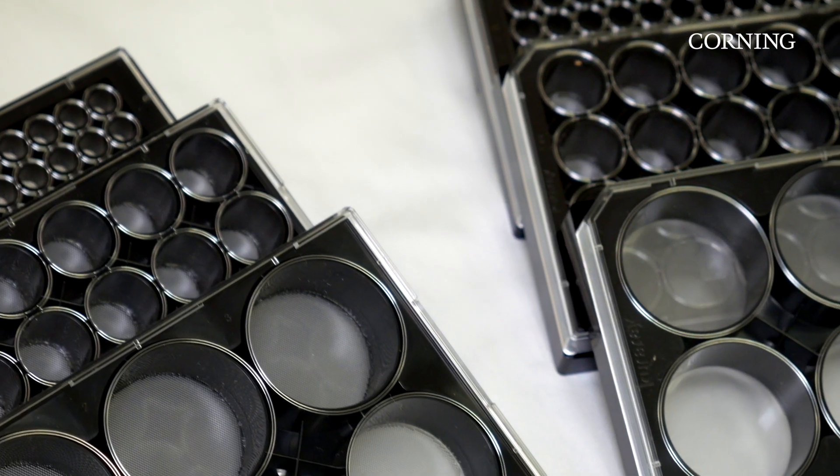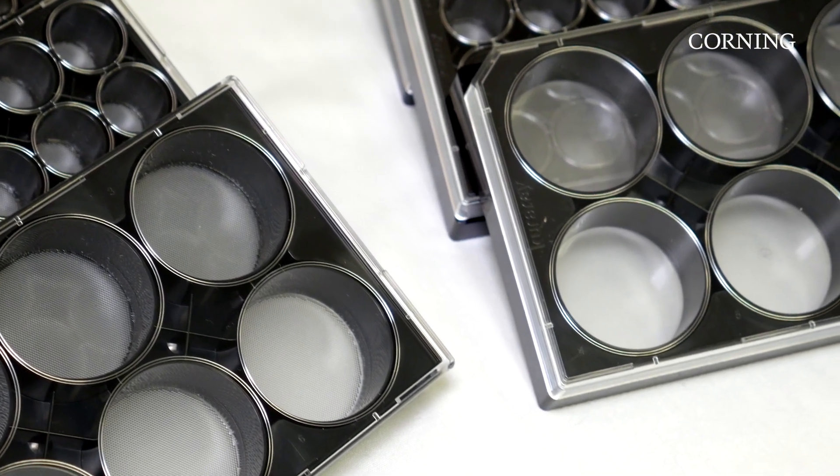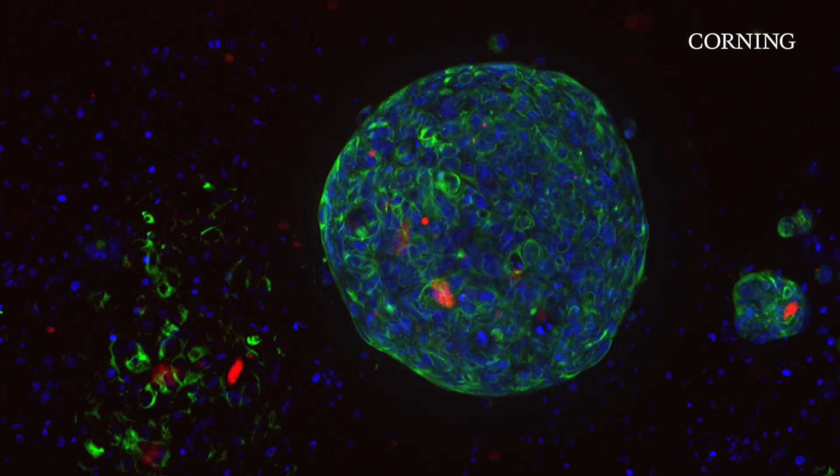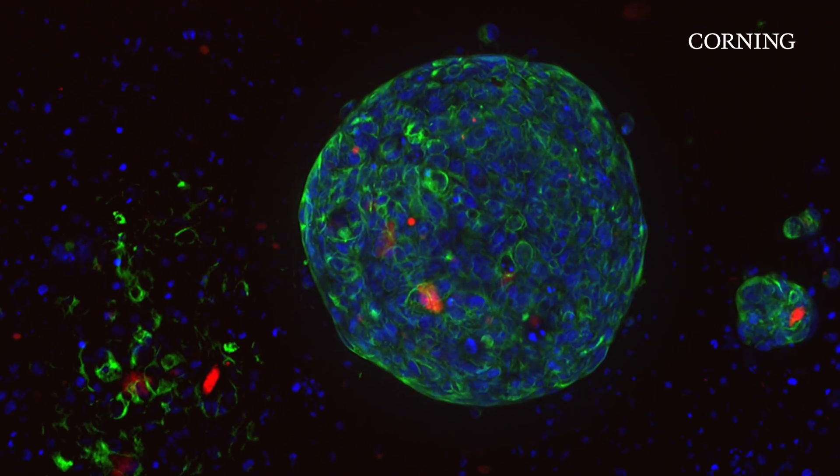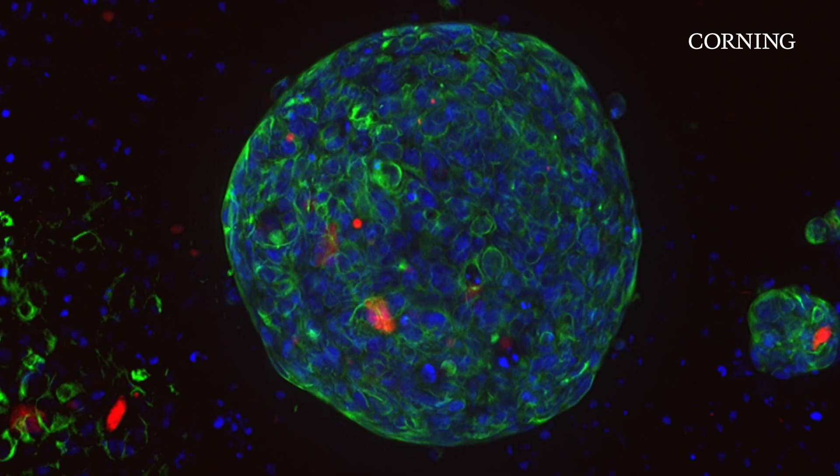Elplasia plates are available in multiple formats with either round or square bottom geometries and two surface coating options. They may be used across many applications including drug discovery, cancer, stem cell, and cell therapy research.